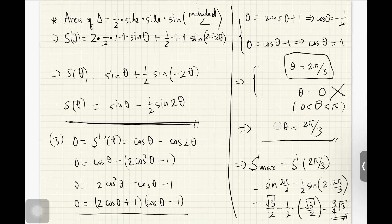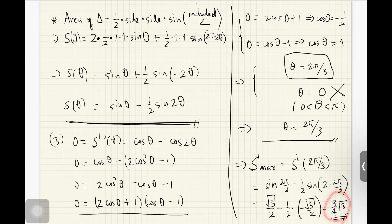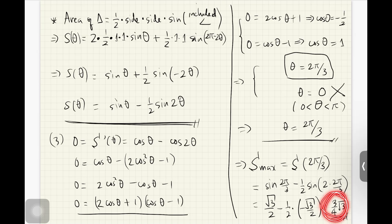To find the maximum area, we substitute theta = 2pi/3: S(2pi/3) = sin(2pi/3) − (1/2)sin(4pi/3), which gives our maximum area value. To verify it's a maximum and not a minimum, we can plug in another value like theta = pi/3. If that gives a smaller area than our result at 2pi/3, then 2pi/3 is confirmed as the maximum.